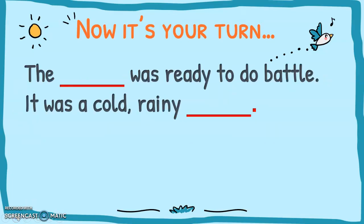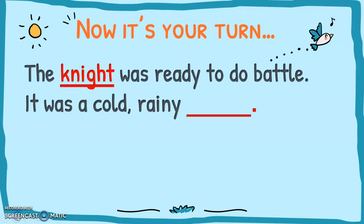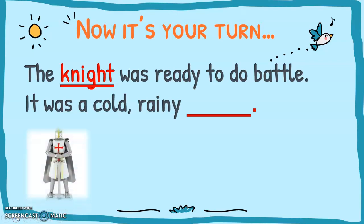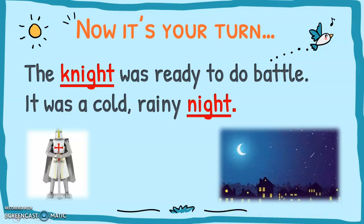Here's another one: 'The blank was ready to do battle. It was a cold, rainy blank.' The first is knight — the knight that rides on a horse, ready to do battle. But of course, there's another night which does not have the silent K at the beginning. 'It was a cold and rainy night.'